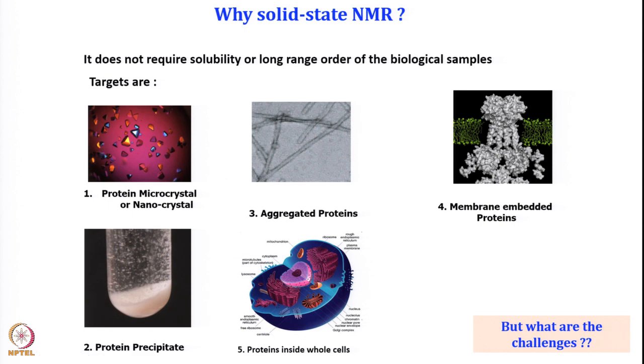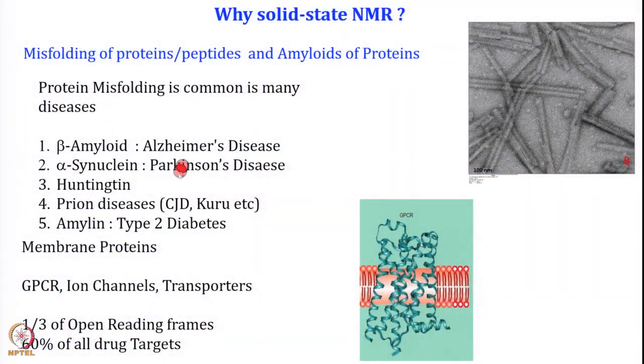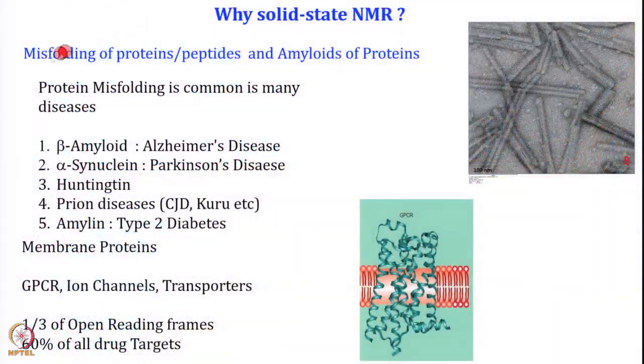If solid-state NMR is so useful, what are the challenges? But first, let us look at two proteins that are very popular for solid-state NMR: amyloid fibers and membrane proteins. As Christopher Robson once said, under certain conditions all proteins and peptides have a tendency to form amyloid fibers. Protein misfolding is a common phenomenon in many diseases — proteins that are not properly folded, or that misfold upon certain stimuli, can aggregate and form fiber-like structures.